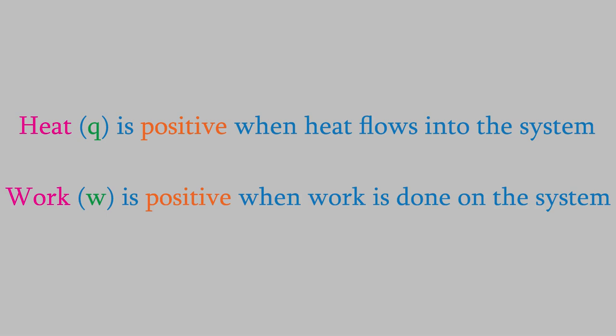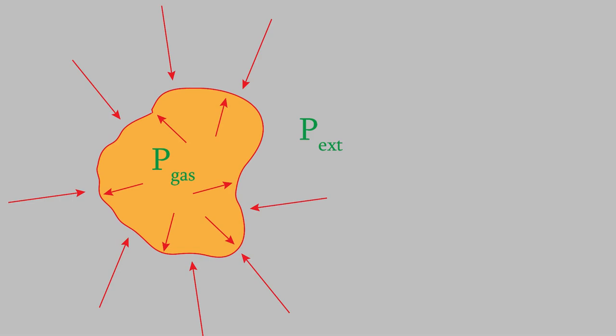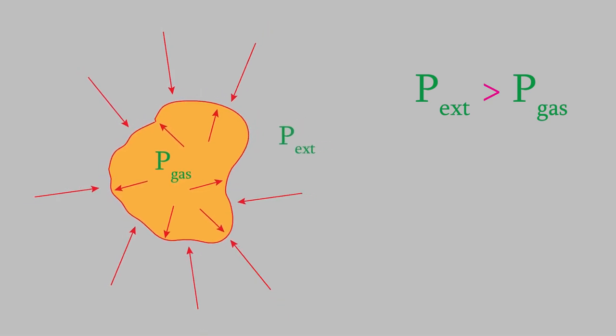For now, we're mainly interested in gases, so let's see how heat and work are related to the behavior of a gas. Suppose we have a container filled with a gas. We'll call the pressure inside the container P_gas. Meanwhile, the surroundings exert a pressure on the outside of the container, which we'll call P_external. Now, imagine what will happen if the pressure outside the container is greater than inside the container, so P_external is greater than P_gas. As you might expect, the greater pressure outside will cause the container to contract, so the volume decreases.